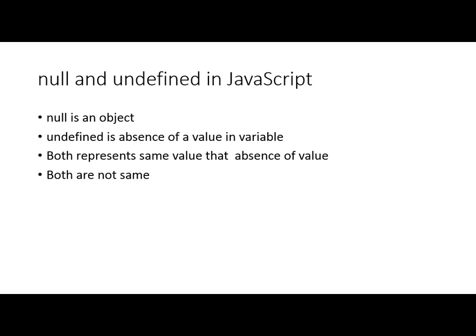So in this video we learnt that Null is an object whereas Undefined is a value of a variable, both representing the absence of a value. Null and Undefined represent the same value, that is absence of a value, but they are not the same. I hope you find this video useful. You can follow me on Twitter — my handle is debug_mode — and I blog on debugmode.net. Thank you so much for watching this video.